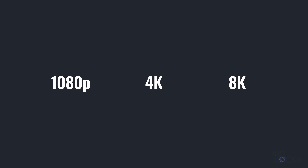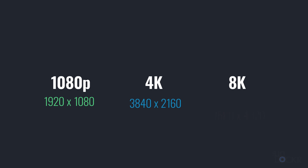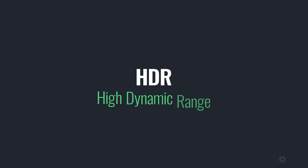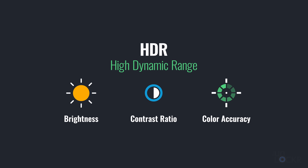A bit about what HDR is. As mentioned, 1080p, 4K, 8K — these are all resolutions, the literal number of pixels a TV has on it. Generally speaking, the higher this number, the sharper things will look. HDR, or High Dynamic Range, is really about a few factors: the brightness, the contrast ratio, and the color accuracy. The contrast ratio is the difference between the brightest parts of the image versus the darkest parts.